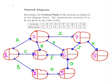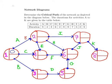So the earliest we can be finished at node one is simply time zero. A takes eight time units, so the earliest we can have everything completed at node two is time eight, because we have activity A completed.